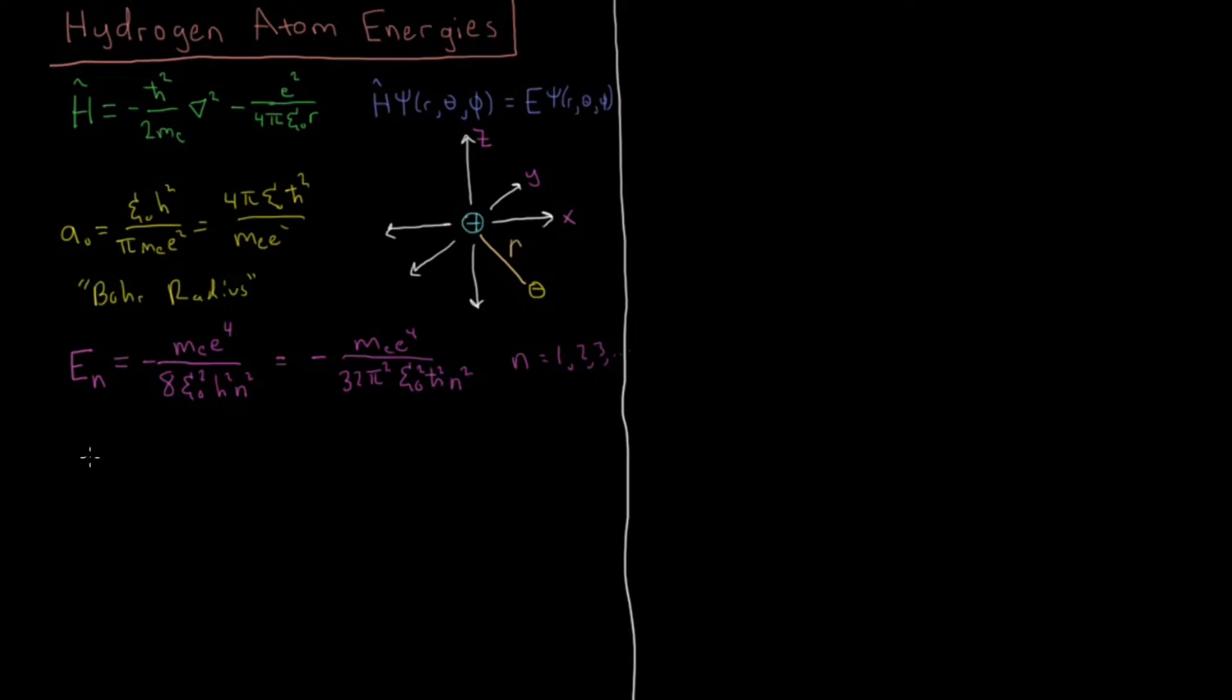So then, to write that again in terms of the Bohr radius, our energies are minus e-squared over 8π epsilon naught a-naught, and again proportional to 1 over n-squared, where n is some integer.